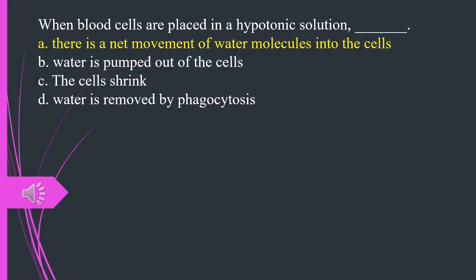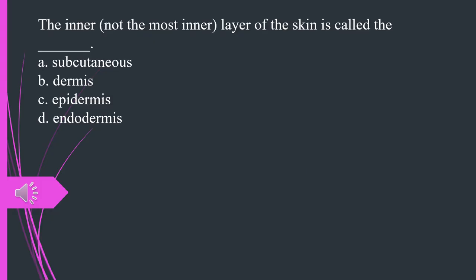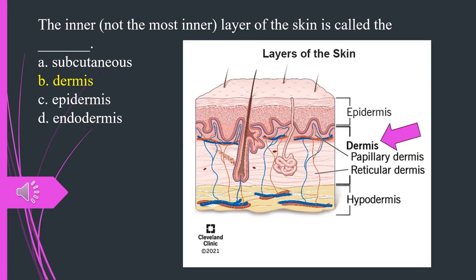The inner, not the most inner, layer of the skin is called what? A. Subcutaneous. B. Dermis. C. Epidermis. D. Endodermis. The answer is B. Dermis.